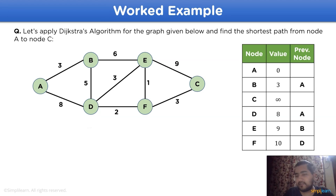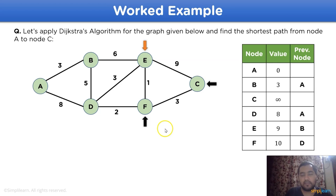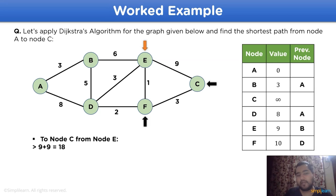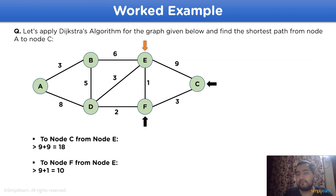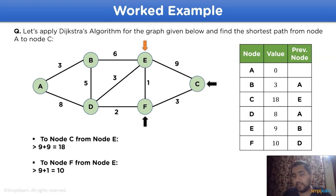Let's choose the next current node, which is node e, because 9 is smaller than 10. Node e is the current node and the directly connected nodes are node f and node c. The distance from node e to node c is 9 plus 9, totaling 18. For node f from node e, it is 9 plus 1, equaling 10. Comparing with the table: node f is already at 10, so there is no change. For node c, it was infinity and 18 is smaller, so the new table shows node c with value 18 and previous node as e.